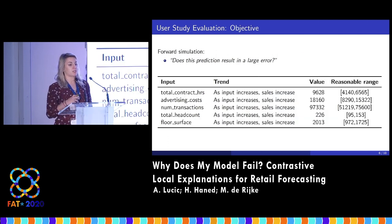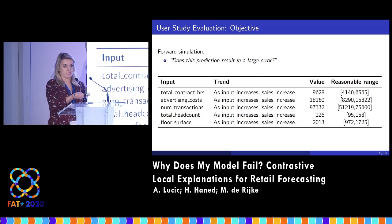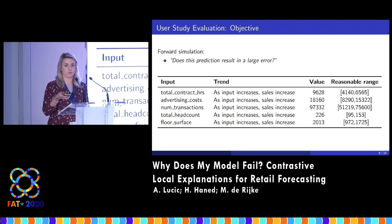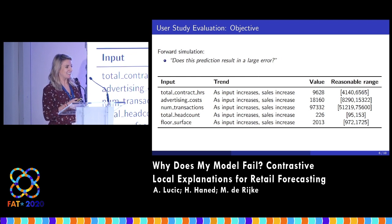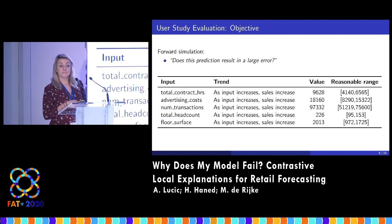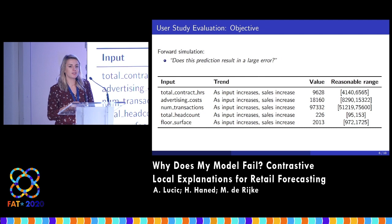This is an example of a forward simulation. We give the user the input features — the same table with the input and values — the explanation, the trend, and the reasonable range, and we ask them: does this prediction result in a large error? So we're asking them to simulate the model. Does anyone want to take a guess? [Audience: All your values are outside of your data.] Exactly — great.